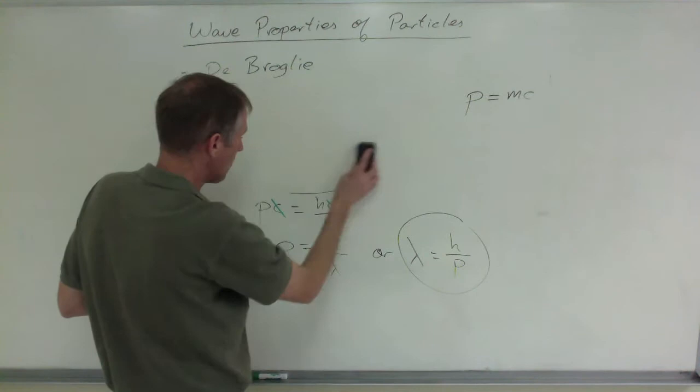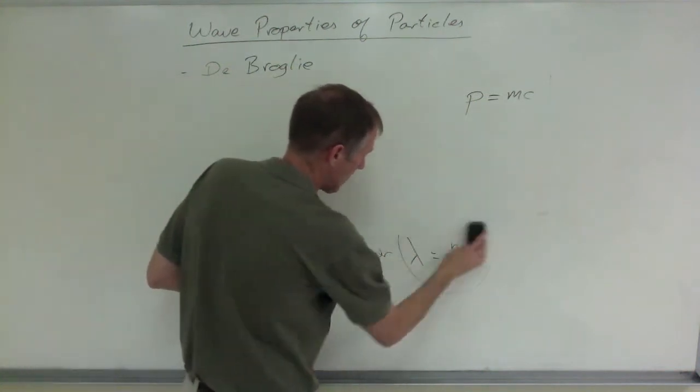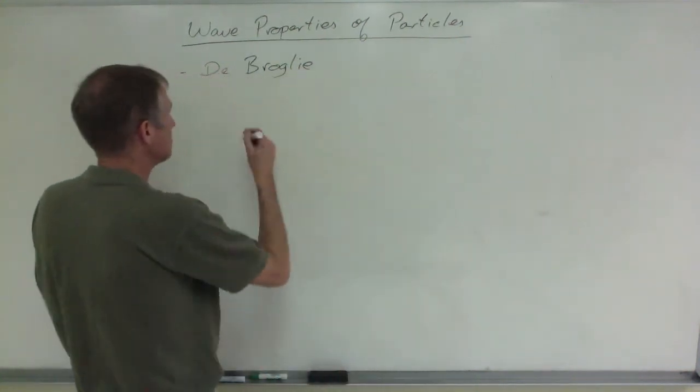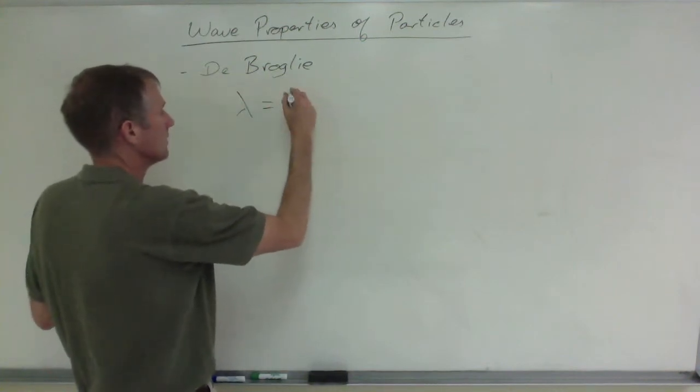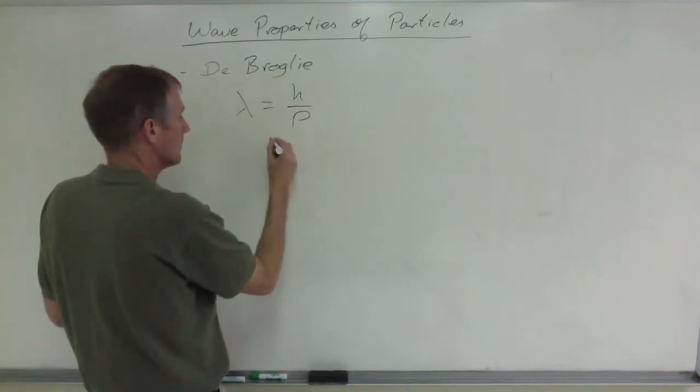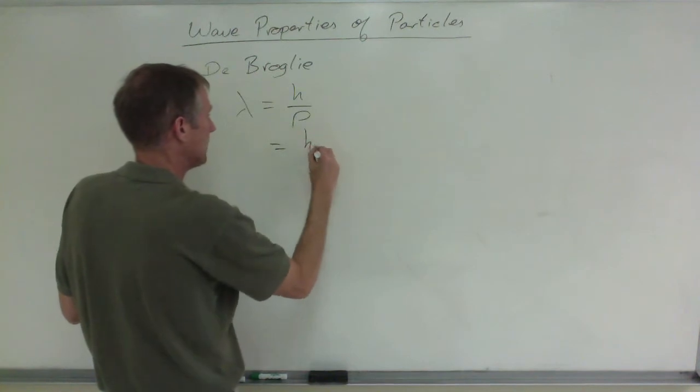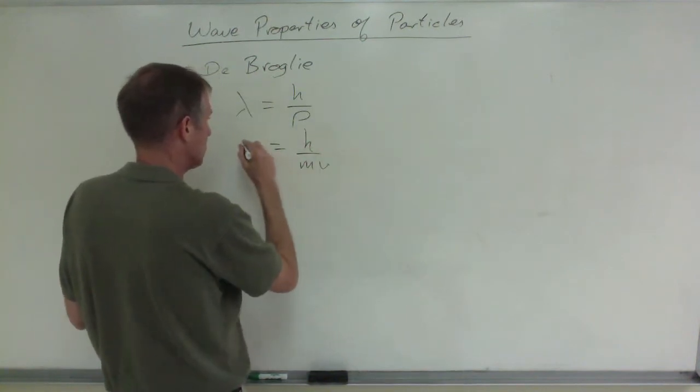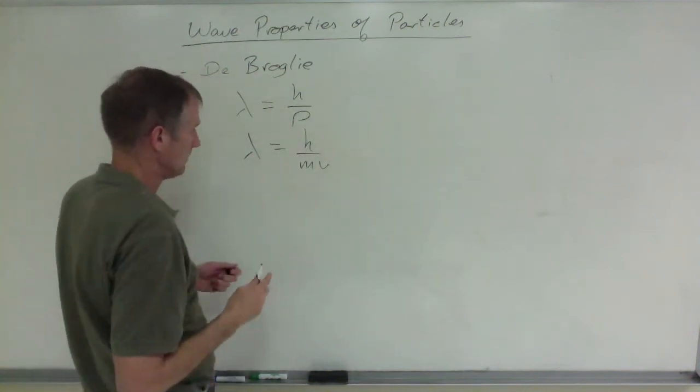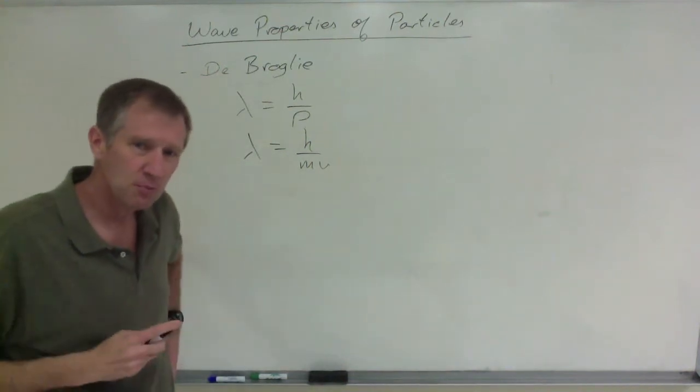One thing I do want to warn you is that as you get close to the speed of light, we're going to use lambda equals h over mv, because p is mv for whatever particle.